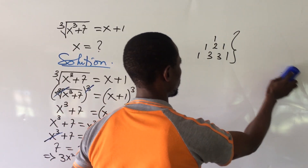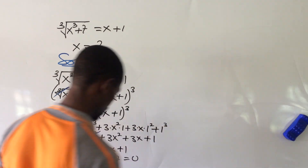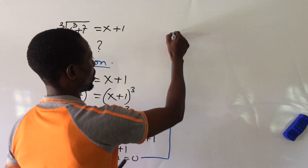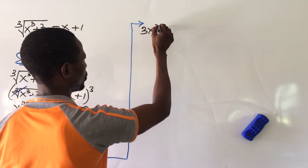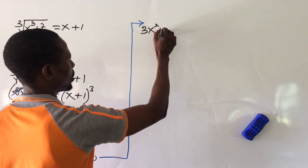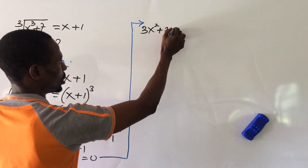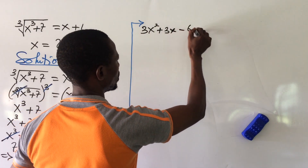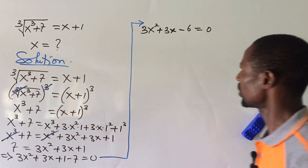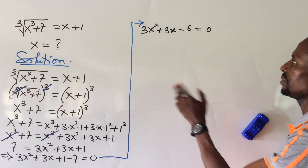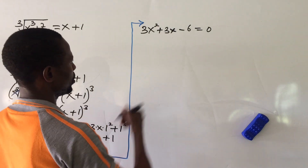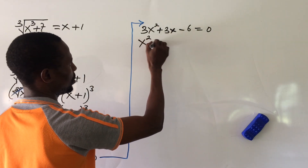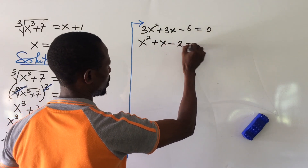So 1 minus 7 gives us minus 6, giving the equation 3x² + 3x − 6 = 0. This is a quadratic equation. Since 3 is common to all terms, we divide through by 3 to get x² + x − 2 = 0.